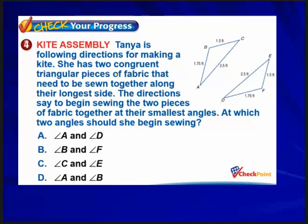Tanya is making a kite with two congruent triangular pieces of fabric sewn along their longest side. The directions say to begin sewing at their smallest angles. The longer sides are 1.75 and 1.5 on the opposite sides of angles C and A respectively. Since 1.5 is smaller, angle A is smaller than angle C. Its corresponding angle is D, so she should begin at angles A and D — choice A. Those are a few examples of how to use these relationships to answer real-life questions.